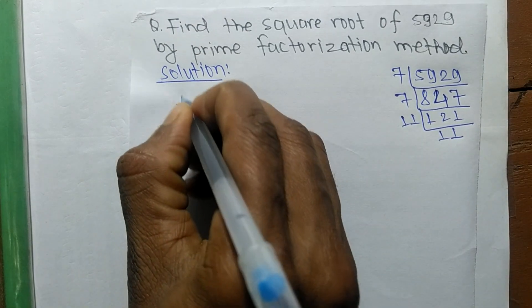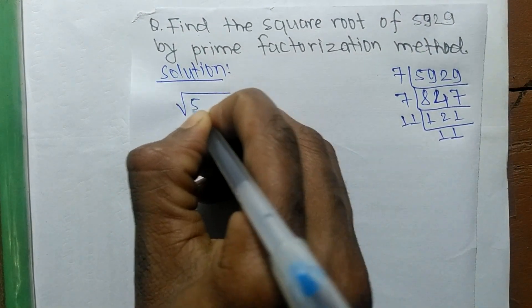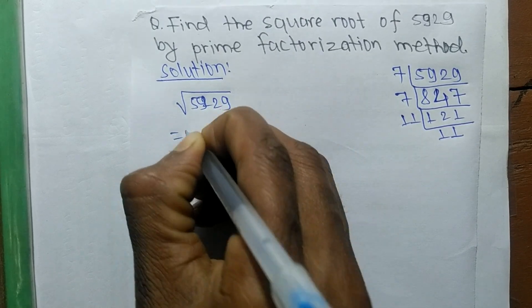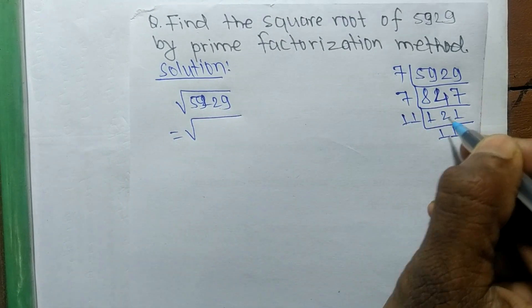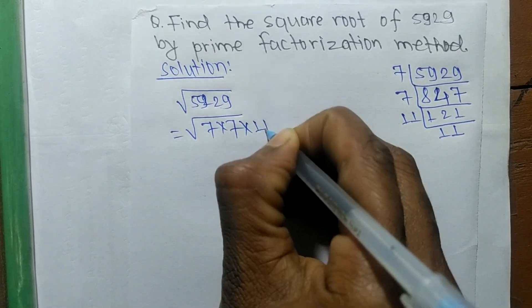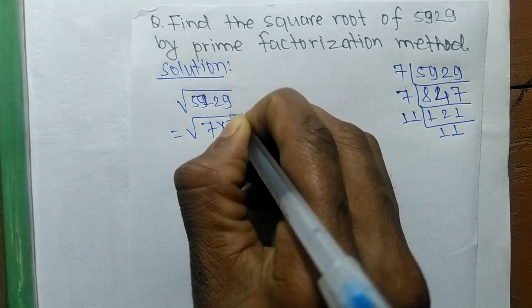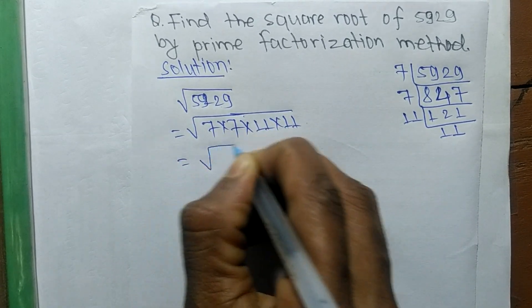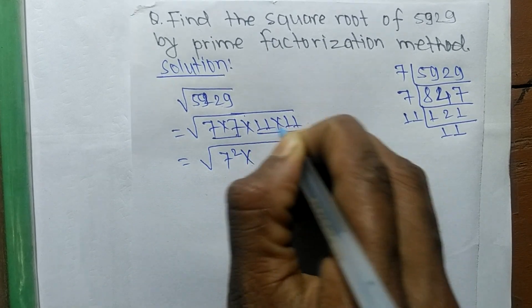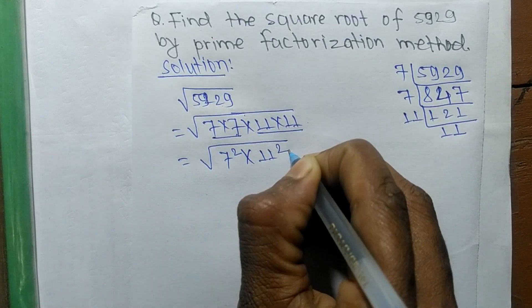So from the prime factors we can write 7 into 7 like as 11 times 11. So 7 into 7 means it is 7 square, 11 times 11 it is 11 square.